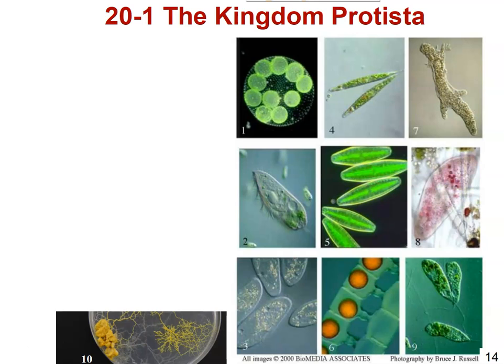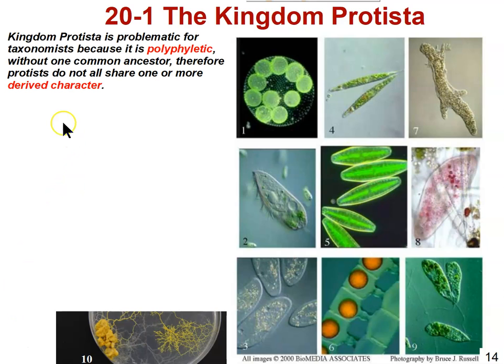In general, protists are single-celled organisms that are eukaryotic, as opposed to bacteria, which are single-celled organisms that are prokaryotic. But the thing that's weird about the Kingdom Protista is that it really shouldn't be a kingdom, because the members are not necessarily related to each other by common ancestry. They're what we refer to as polyphyletic, meaning they have multiple ancestors instead of just one common ancestor.